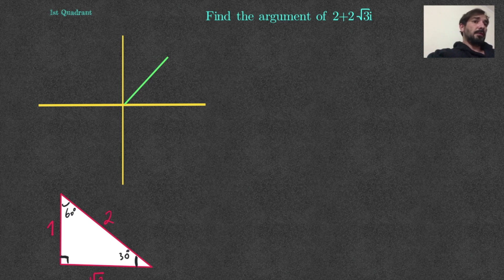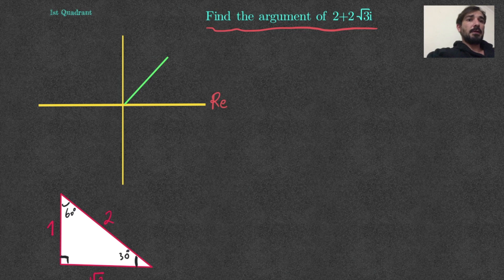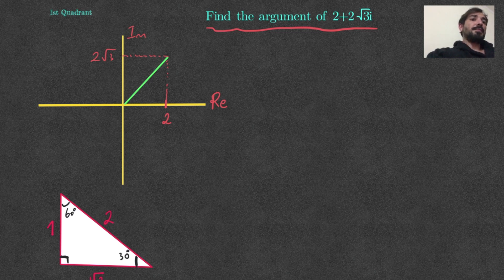Let's start with the first example: find the argument of 2 plus 2√3·i. First of all, let's remember the x-axis in the Argand diagram is the real part and the y-axis is the imaginary part. So 2 will be the real part and 2√3 will be the imaginary part.